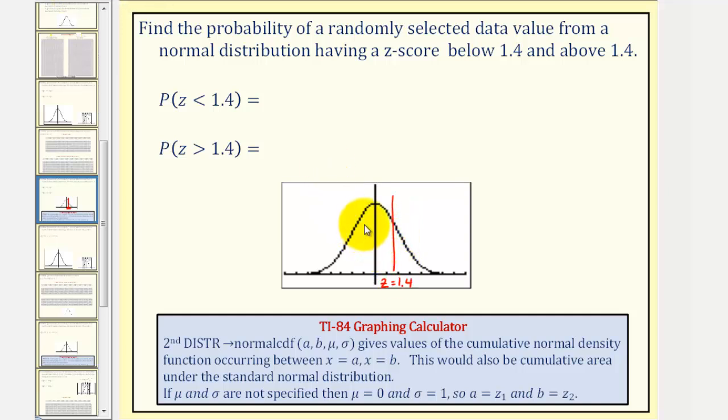The area to the left would represent the probability that z is less than 1.4, and the area to the right would be the probability that z is greater than 1.4. The areas represent the probabilities we're looking for.